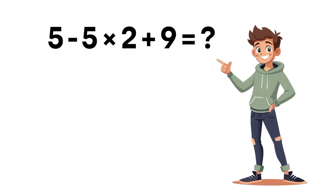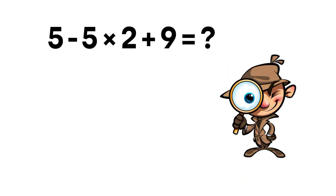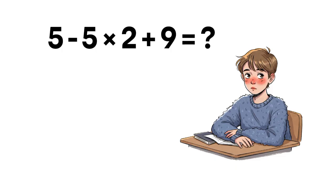Today's expression is 5 minus 5 times 2 plus 9. At first glance, it looks simple, right? Well, that's exactly why so many people get it wrong.